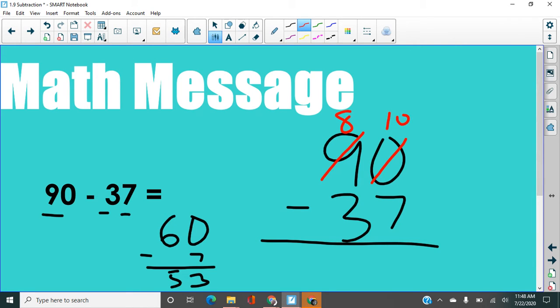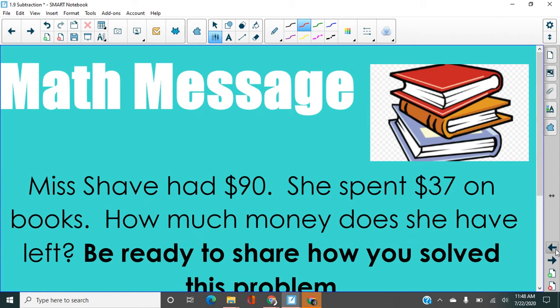That group of 10 is worth 10 ones. So now I can do this. 10 minus seven is three, and eight minus three is five. 53 is our answer. 53 what? $53.